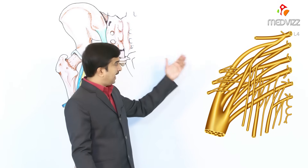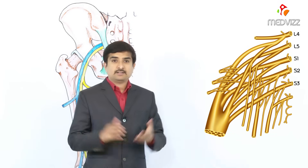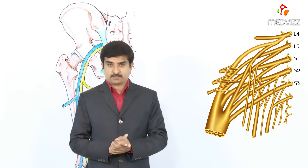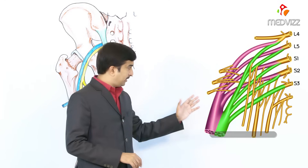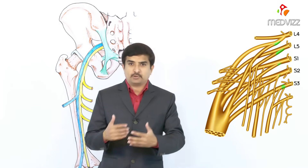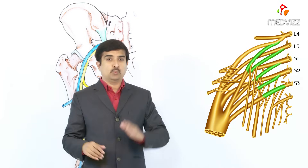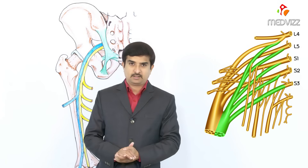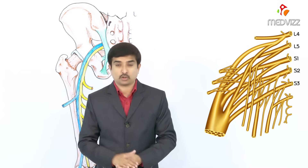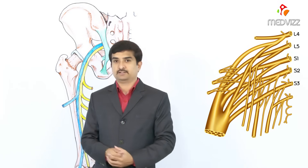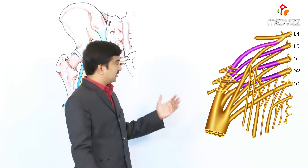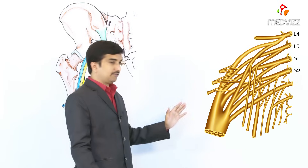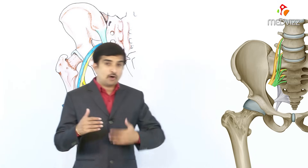The origin of the sciatic nerve is from the ventral rami of L4 to S3 nerves. The sciatic nerve has two components: one is a tibial component and the second is a peroneal component. The tibial component is mainly formed from the ventral divisions of the ventral rami of L4 to S3 spinal nerves, whereas the common peroneal component is formed from the dorsal divisions of the ventral rami of L4 to S2.